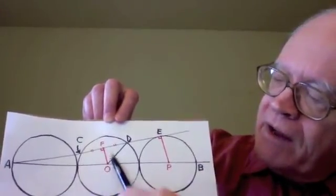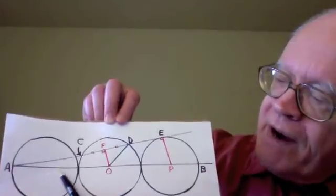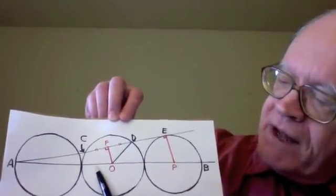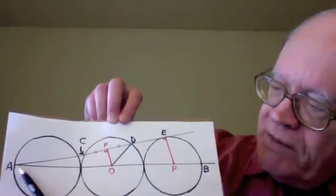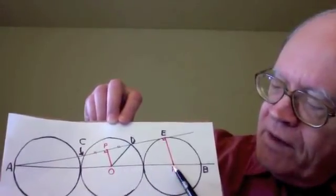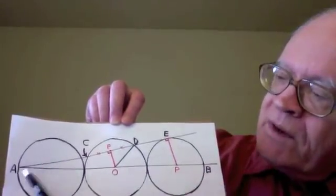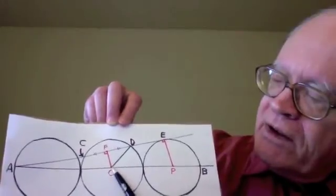In the smaller triangle AOF, we have 3 radii. That's a length of 3. So we have this proportion: 5, 5 fifths, 3, 3 fifths. And so the length OF is 3 fifths.